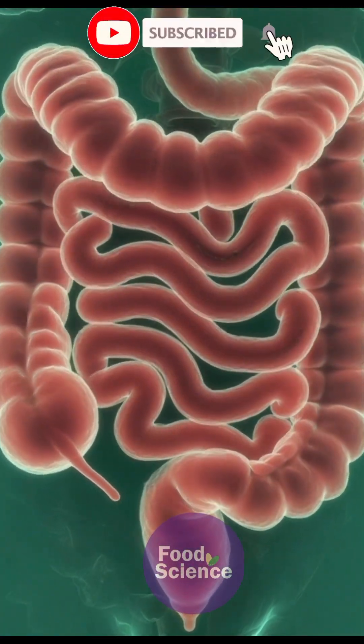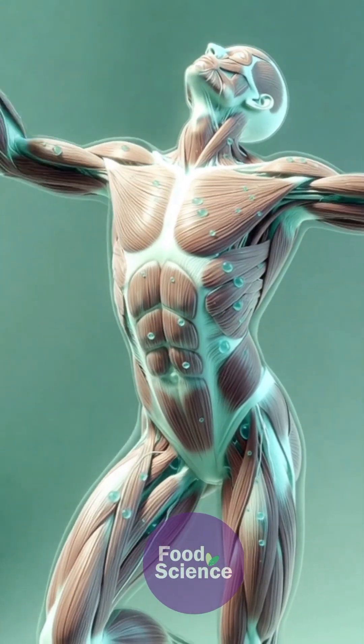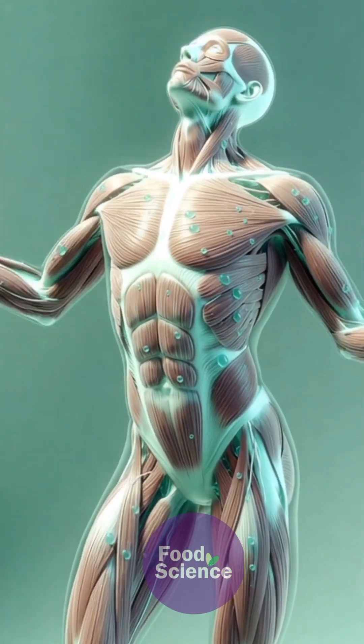Kidneys finely regulate fluid balance, while muscles receive better oxygenation and reduced cramping. Throughout the intestinal tract, adequate hydration supports a healthy mucosal barrier and nurtures a balanced microbiome.